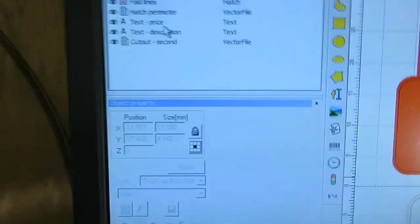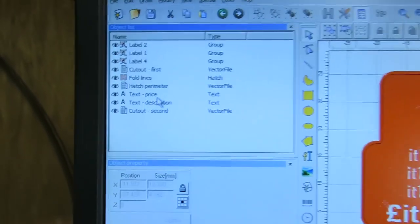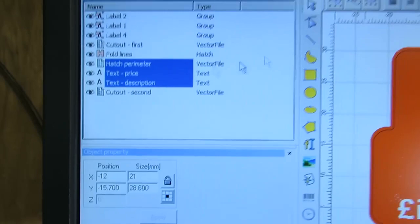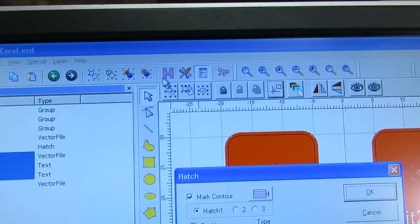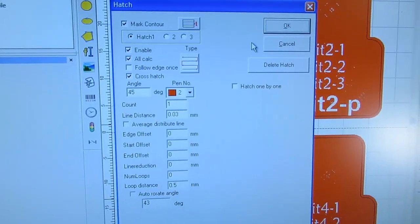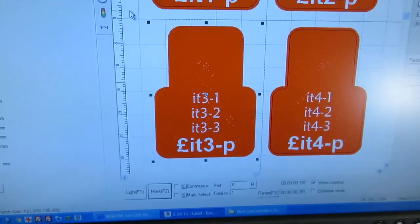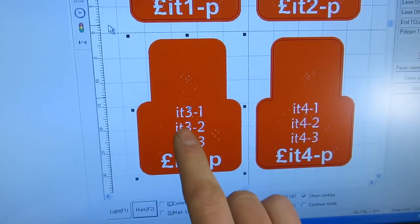Then the two text items and the hatch perimeter are all hatched together. Let's see if I can do this. Select all of them. Hatch. All of that's still the same. Okay. Apply. So that will now hatch everything except the text.